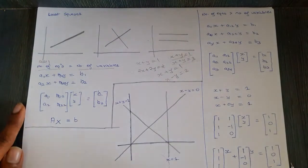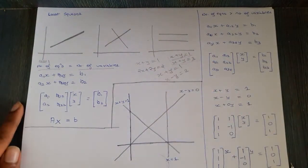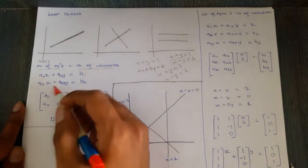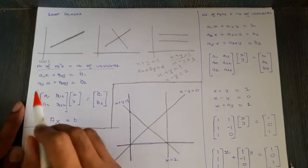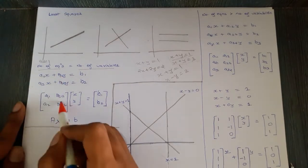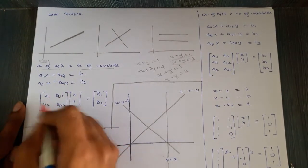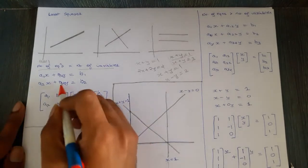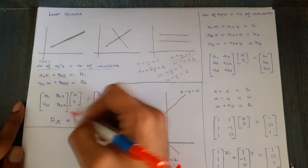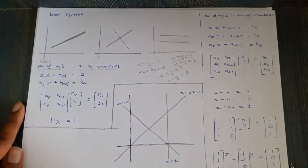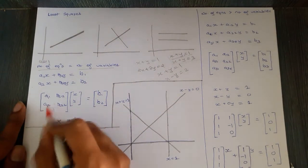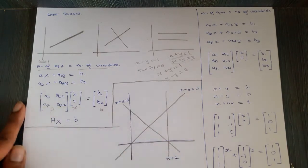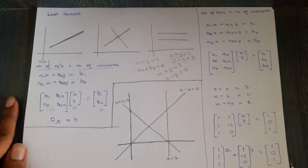These equations can be written in matrix form. We have the matrix A = [[a11, a12], [a21, a22]], the variable vector x = [x, y]ᵀ, and the constant vector b = [b1, b2]ᵀ, giving the system Ax = b.